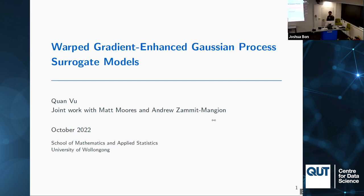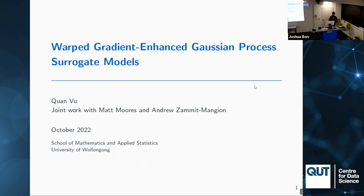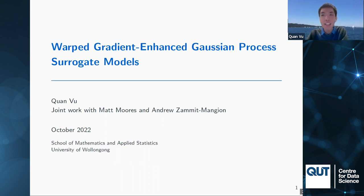Welcome everybody to our third EC Bayes seminar for 2022. Today we've got Kwan Voo from the University of Wollongong giving our seminar, and we're very grateful they are able to present from New South Wales. They're going to be talking about Gaussian processes for surrogate models. With that, I'll pass over to Kwan.